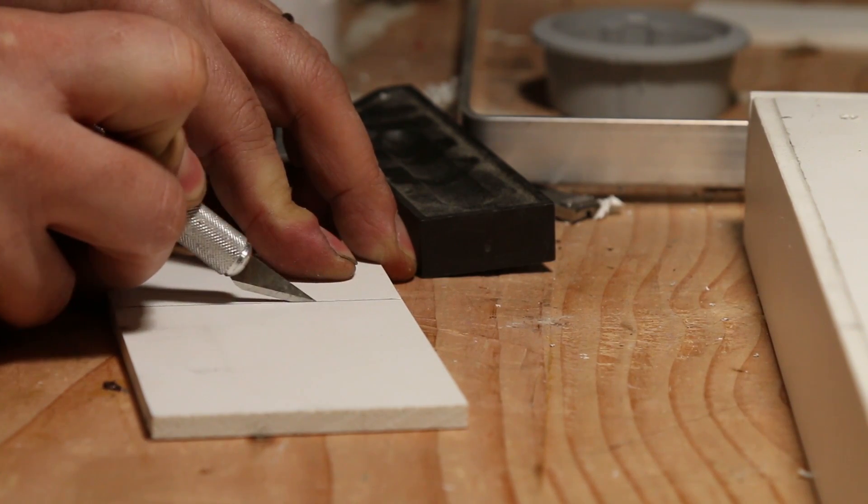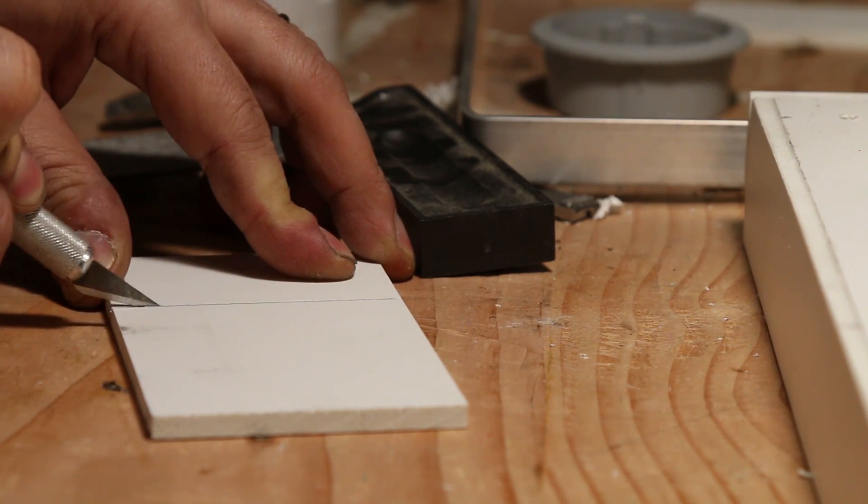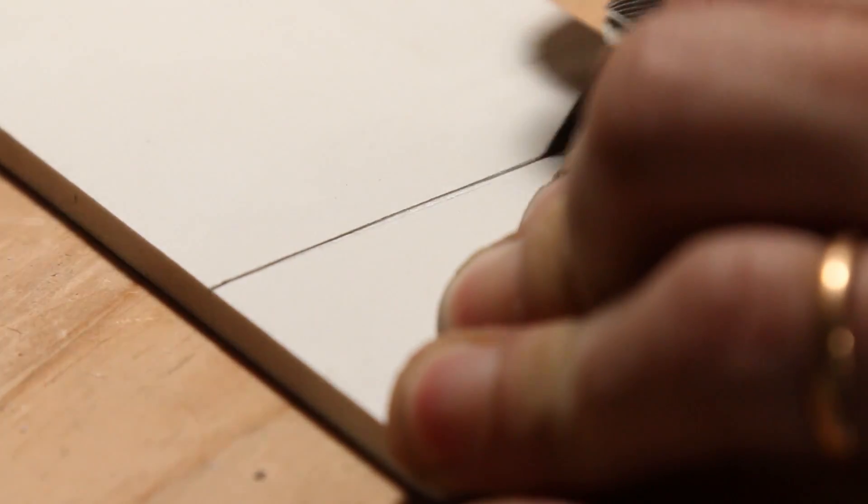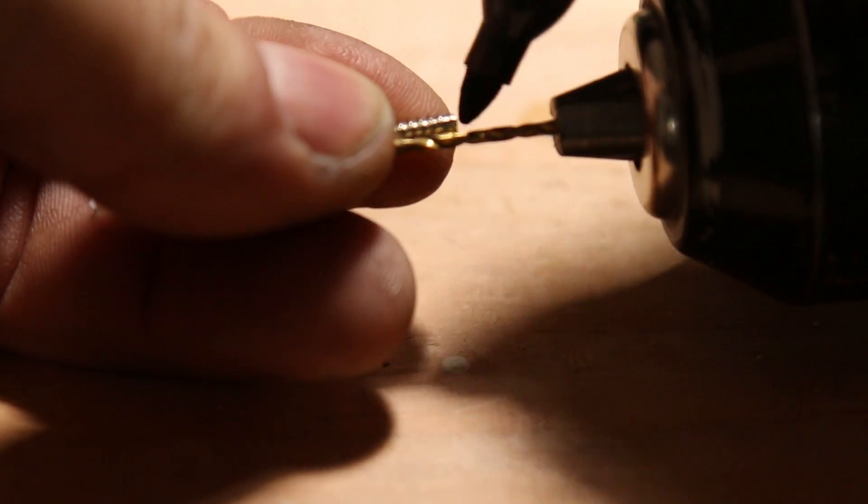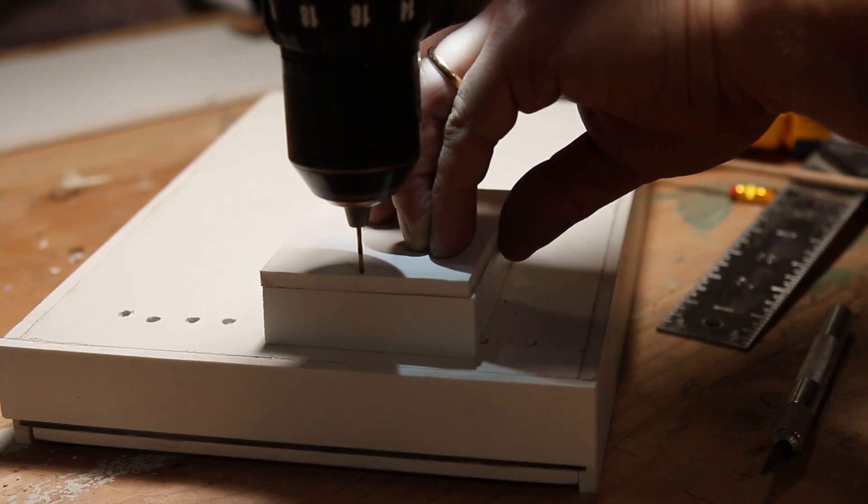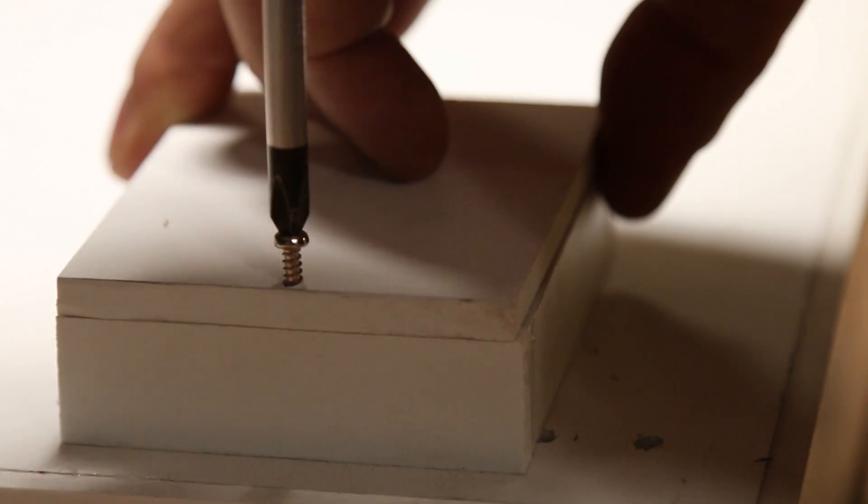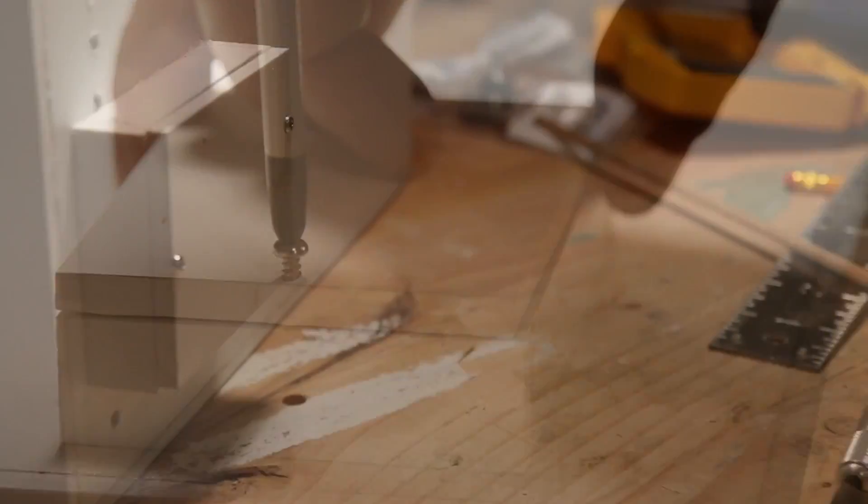You can cut PVC foam board with a knife too. Here I am cutting the cover for the connection box. I marked the size of the screw on a drill bit with a marker. And drilled two holes through the cover. Then install the screws.